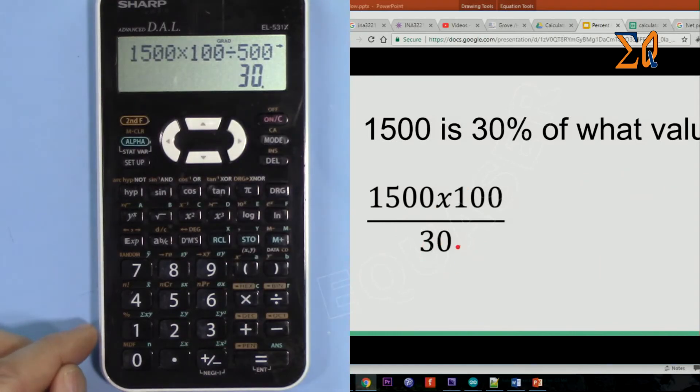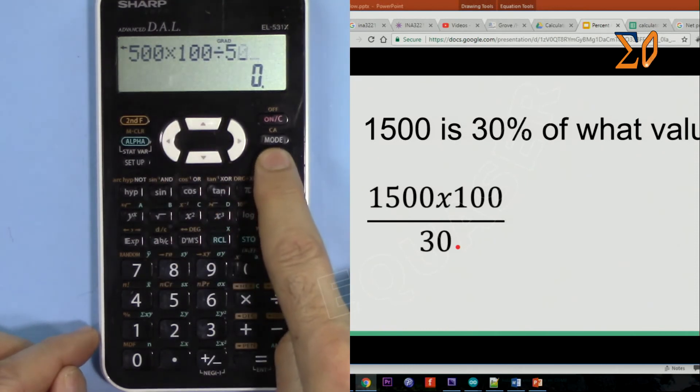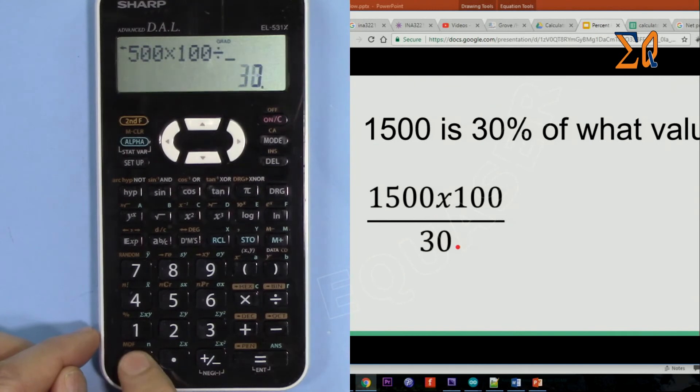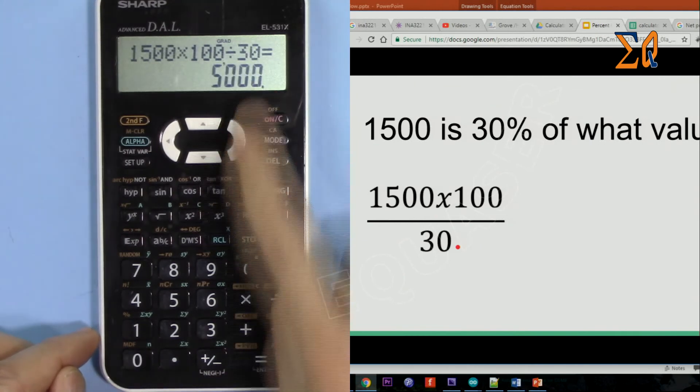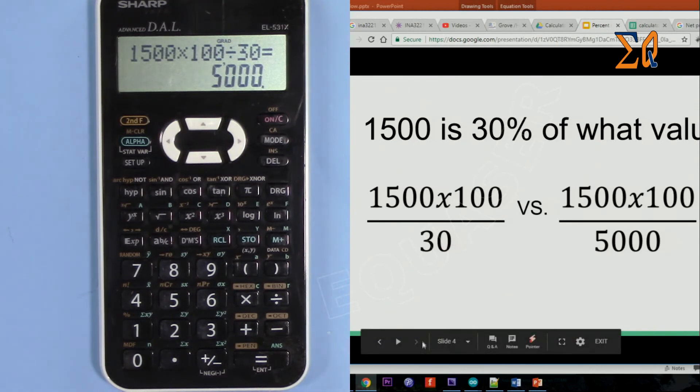So I'm gonna press this arrow, go to the left, delete delete delete, and then type 30. And the answer is 5000. That was easy.